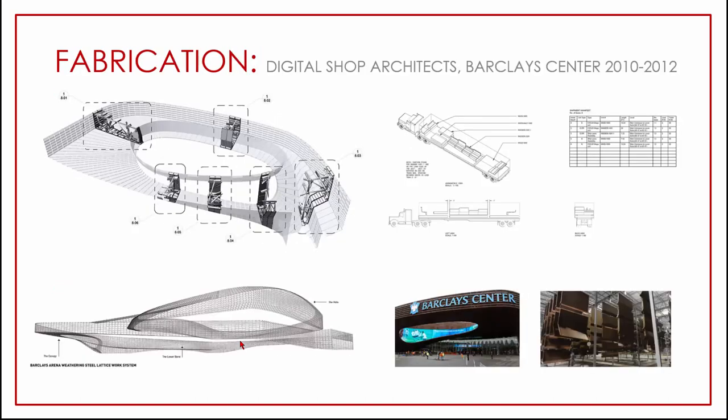A somewhat dated but strong example is the Barclays Center, one of the first buildings by SHoP Architects that really leveraged parametric design across all scales — from representation and visualization of the building, down to the design of the factory, and even instructing how trucks load based on scheduling. It took data as a base element and leveraged it across the board: how the building goes together, how it's transported, and how it's created.